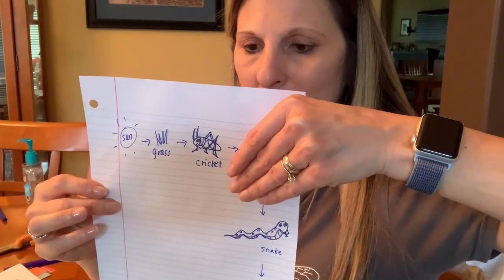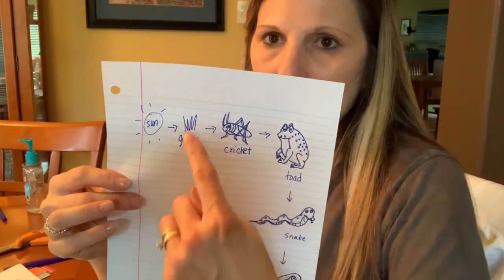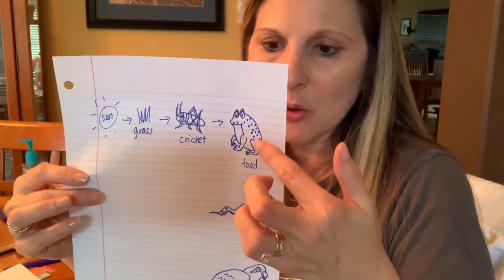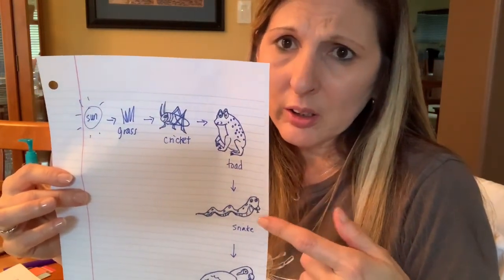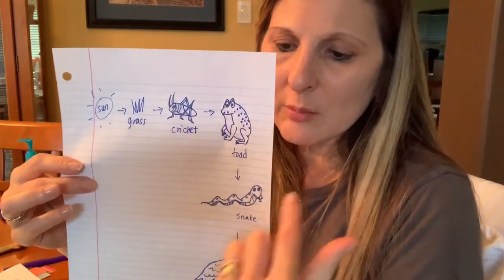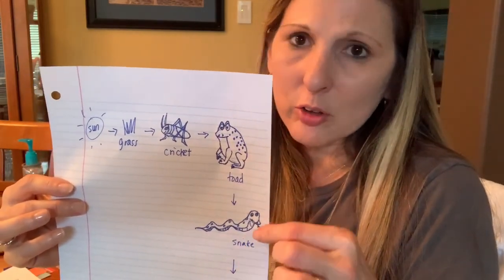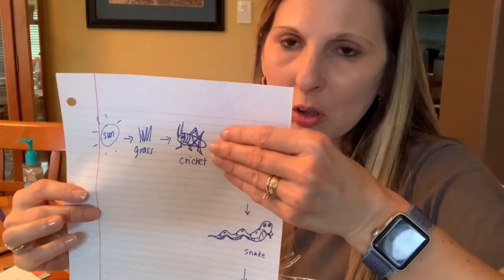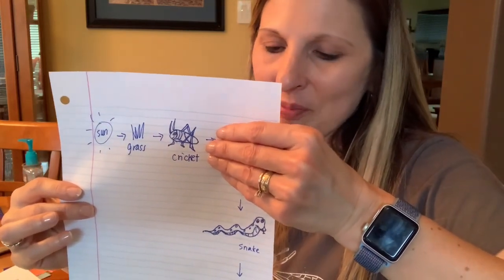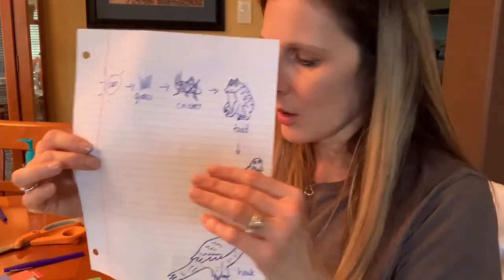They all depend on each other — so if one part is missing, if all the toads disappear, then the crickets are happy and will multiply. There'll be lots and lots of crickets; they might eat all the grass and then we'll have a problem. The snakes will have a problem too because they'll lose their food supply and go hungry. It's not just a straight-line food chain — snakes eat more types of animals than just toads — but if toads are taken away by disease or overhunting, it does have effects on the whole food chain.